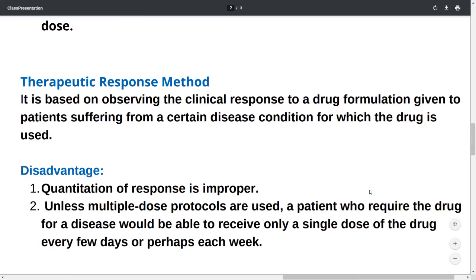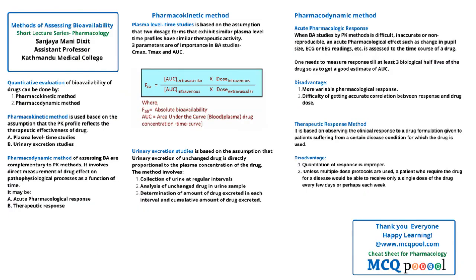That was about the pharmacokinetic and pharmacodynamic methods of assessing bioavailability of drugs. The next lecture, the third in the series, will cover measuring the AUC using the trapezoidal rule. Thank you everyone, happy learning, see you in the next lecture.